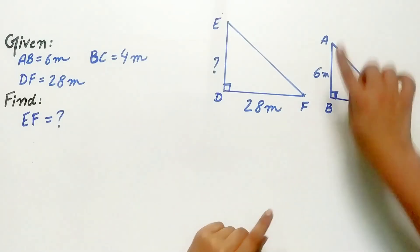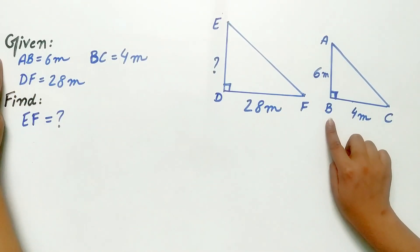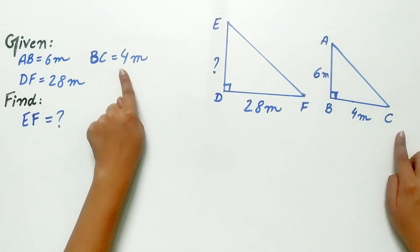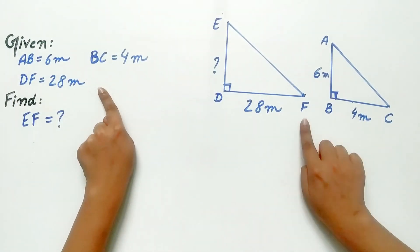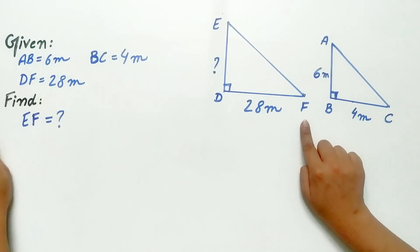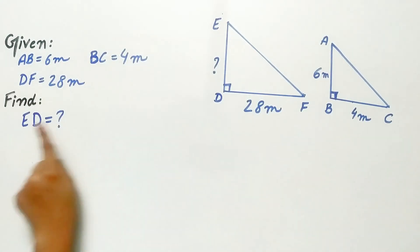Now it's given that AB is 6 meter, BC is 4 meter, DF is 28 meter and we have to find ED that is the height of the tower.